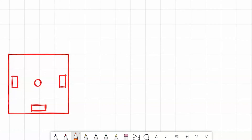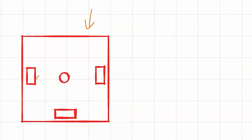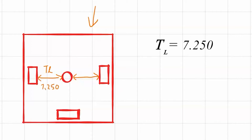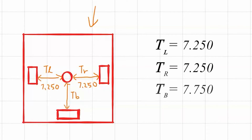To keep things simple for now, our tracking wheels will be positioned so that the two distances between the left and right tracking wheels to the tracking center are equivalent. Let's set some constant variables for our robot. The distance from the left tracking wheel to the tracking center is TL — let's say 7.250 inches. The distance from the right tracking wheel to the tracking center is TR — also 7.250 inches. And finally, the distance from the back tracking wheel to the tracking center, TB, will be 7.750 inches. These three distances will be the constants of our robot, used in our calculations for position and orientation.